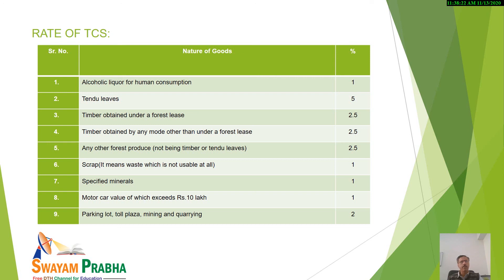As far as parking lot, toll plaza, mining and quarries — the main rule applies. But kindly note that any person who is paying any sum covered under the provisions of TCS must furnish his or her PAN number to the collector — the person responsible for collecting such tax. Otherwise, the collectee will have to pay tax at a higher rate.